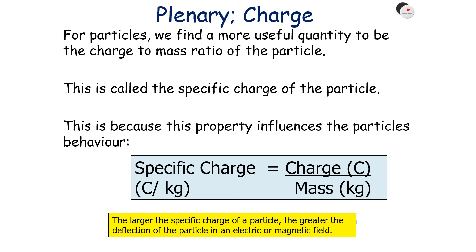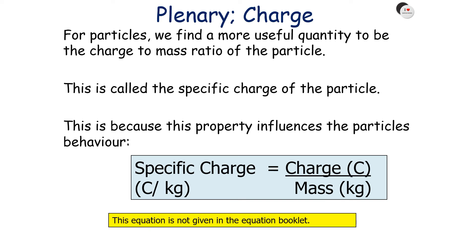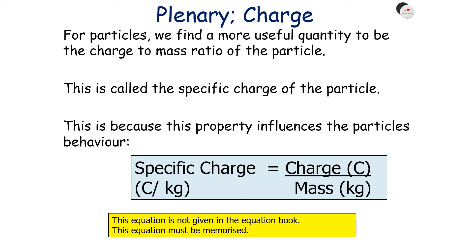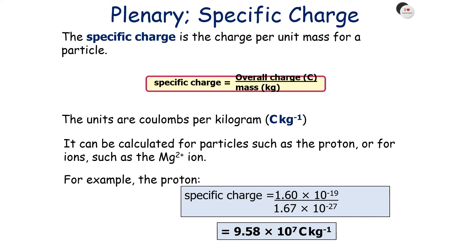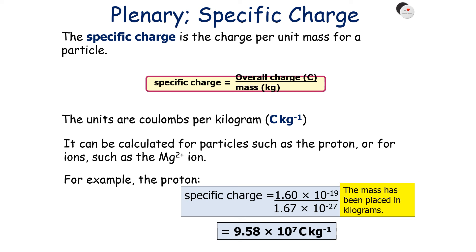For example, to work out the specific charge of the proton: charge = 1.60×10⁻¹⁹ C divided by mass = 1.67×10⁻²⁷ kg, which gives 9.58×10⁷ C/kg. Here's an example calculation: a nucleus of ¹H has a charge of 1.60×10⁻¹⁹ C and a mass of 1.67×10⁻²⁷ kg — calculate the specific charge. Remember, for a nucleus the mass includes both protons and neutrons. The charge must be in Coulombs and mass in kilograms. Note that specific charge is a scalar quantity, so you don't need to include a minus sign.